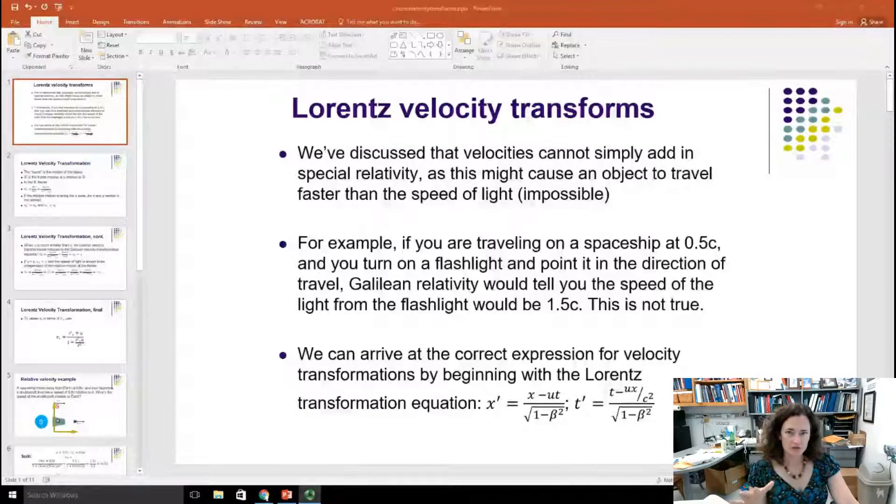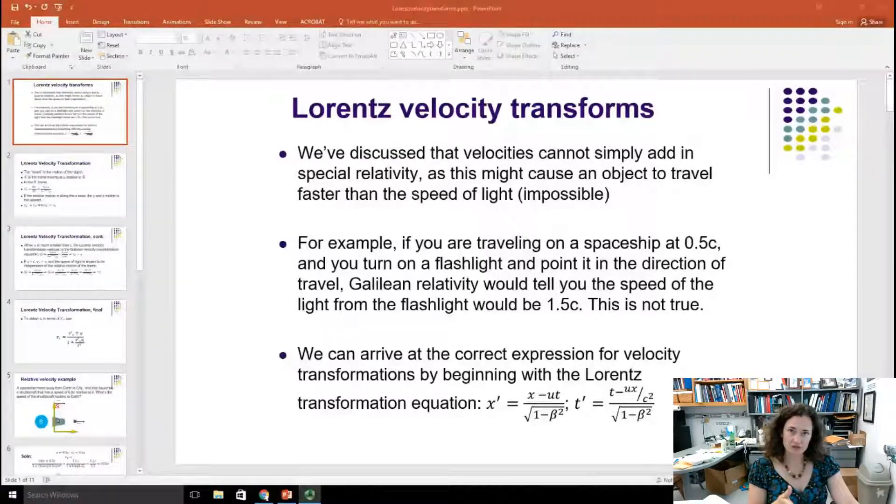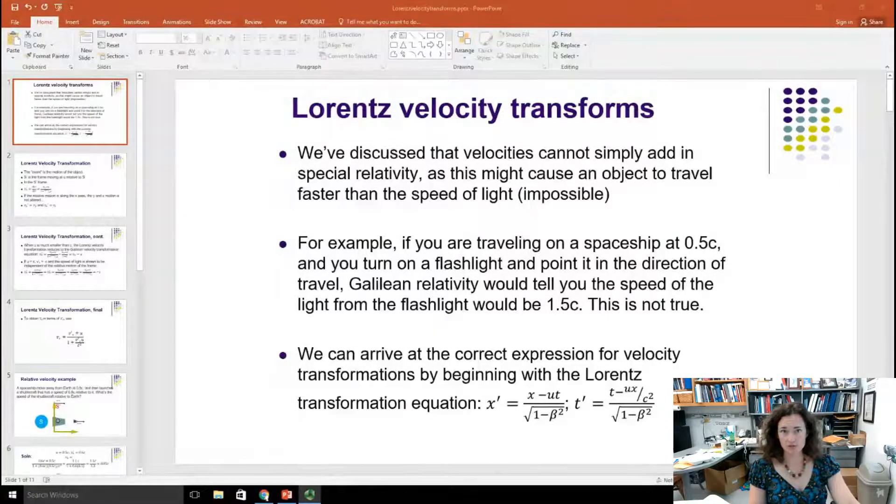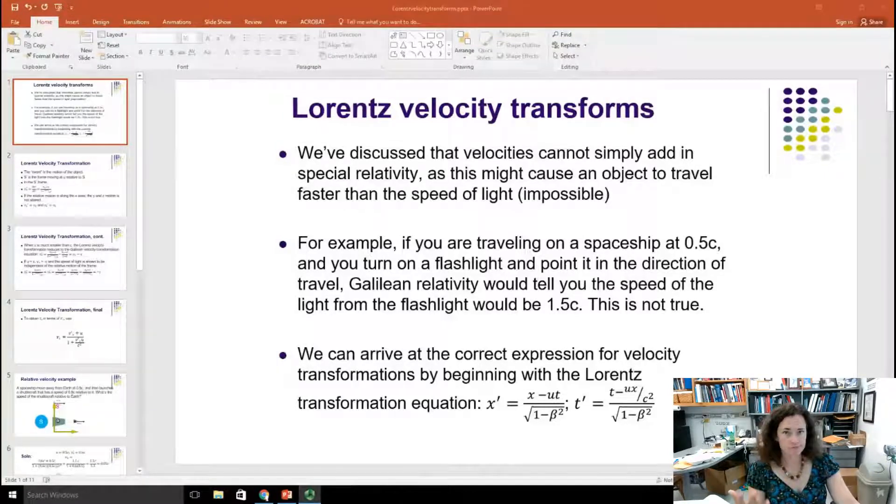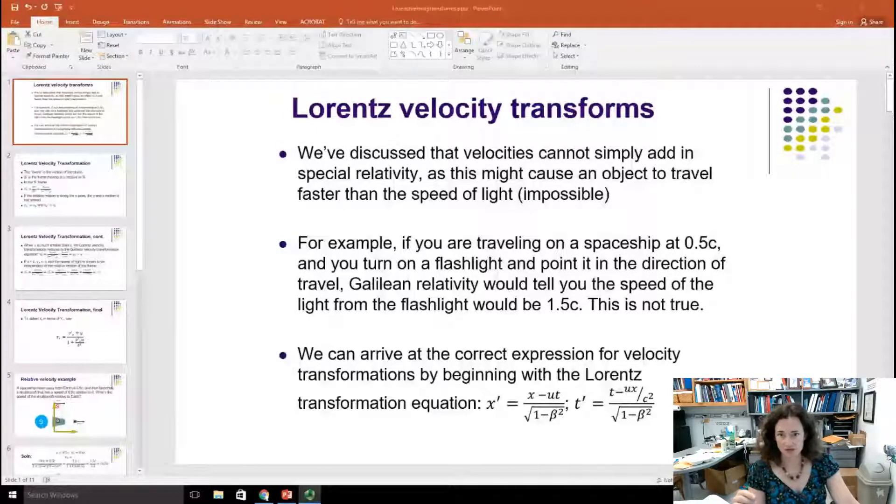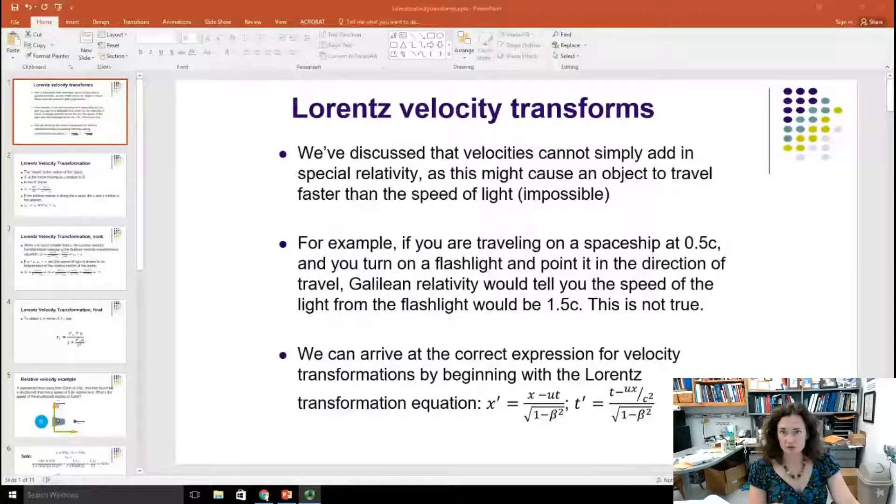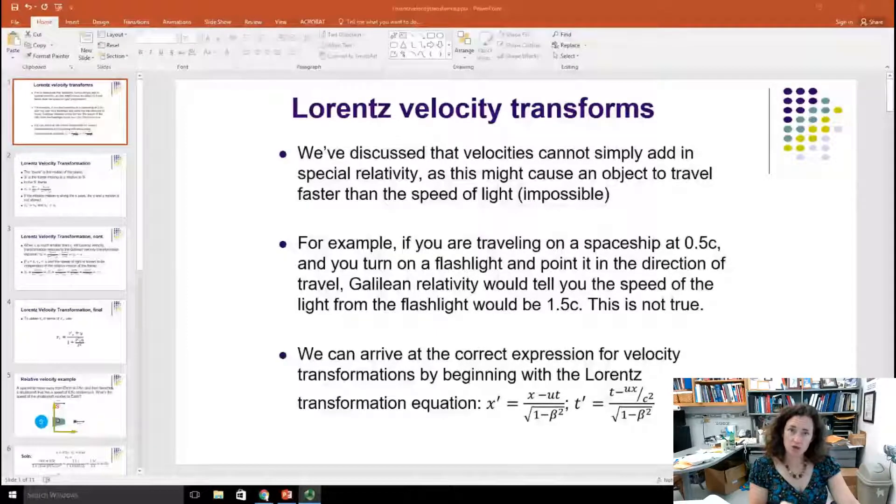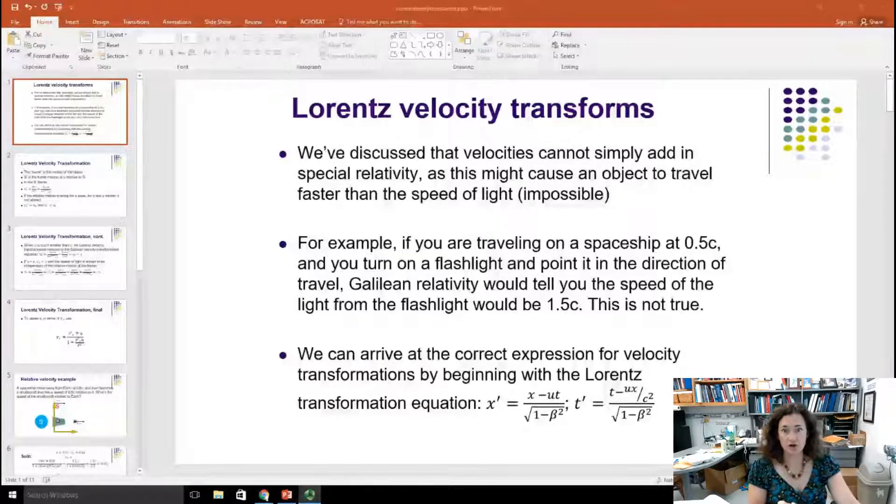To hammer this home, let me explain. Remember that one of the postulates of special relativity is that the speed of light be the same according to all inertial reference frames. So the perfect example of this is let's say that you're traveling on a spaceship at half the speed of light, and then while you're on that spaceship you take a flashlight and you flick it on and you point the flashlight in the direction that you're traveling.